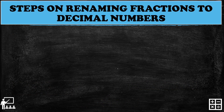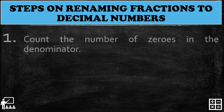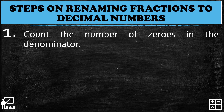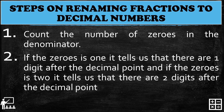In this lesson I will show you the steps on renaming fractions to decimal numbers. First, count the number of zeros in the denominator. Second, if the zeros is one, it tells us that there is one digit after the decimal point. If the zeros is two, it tells us that there are two digits after the decimal point.